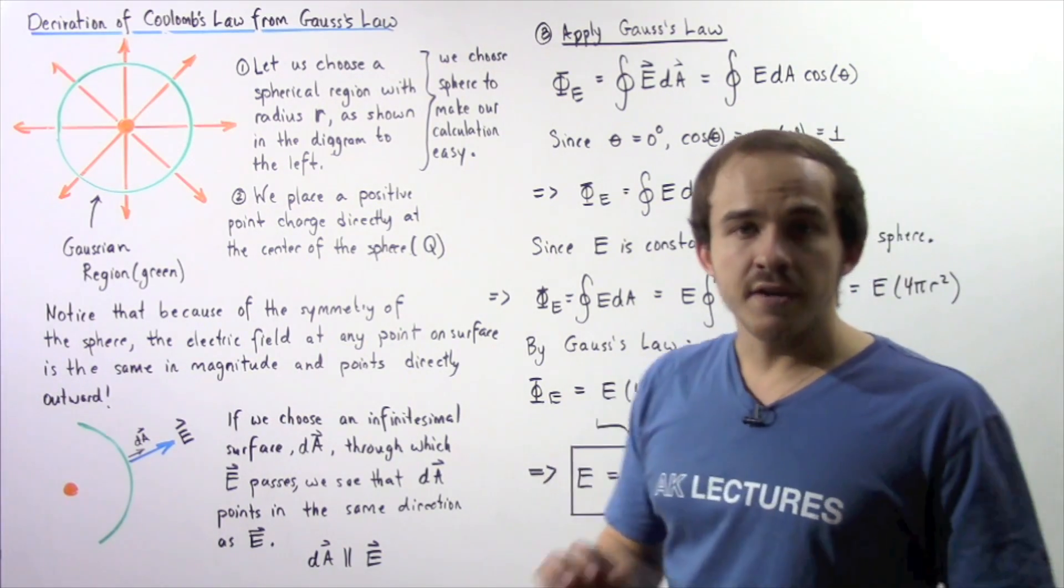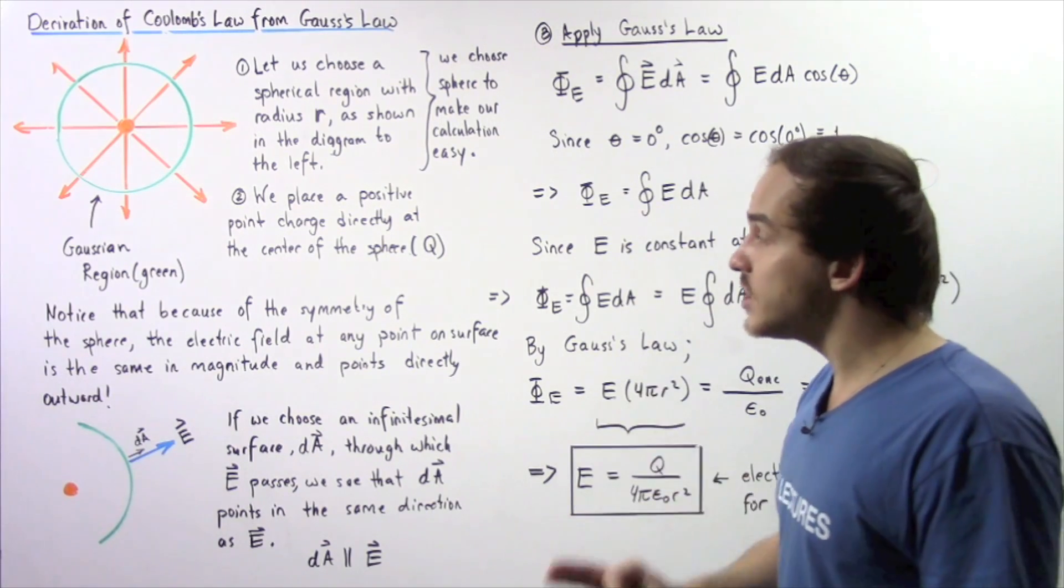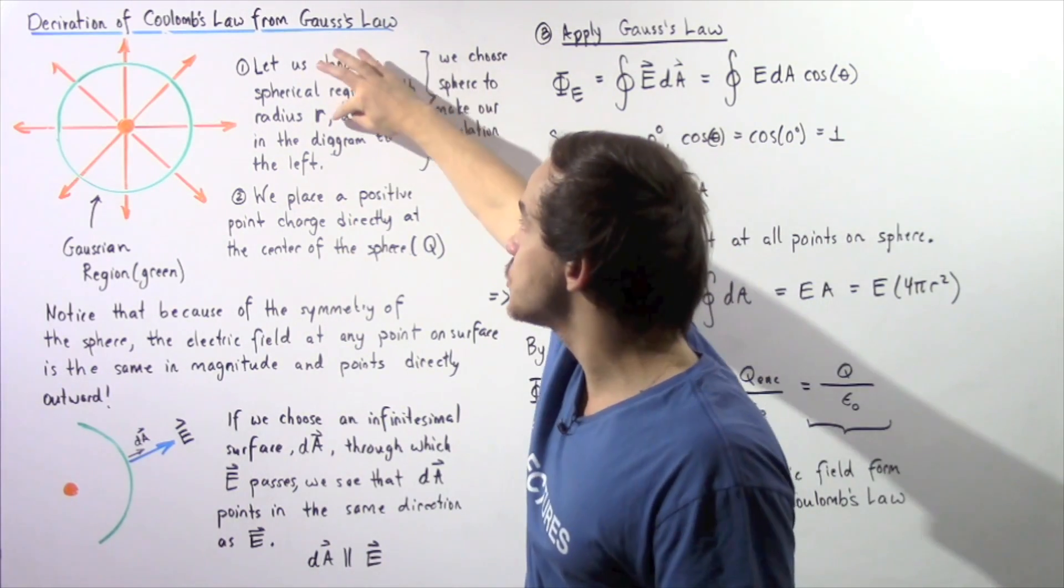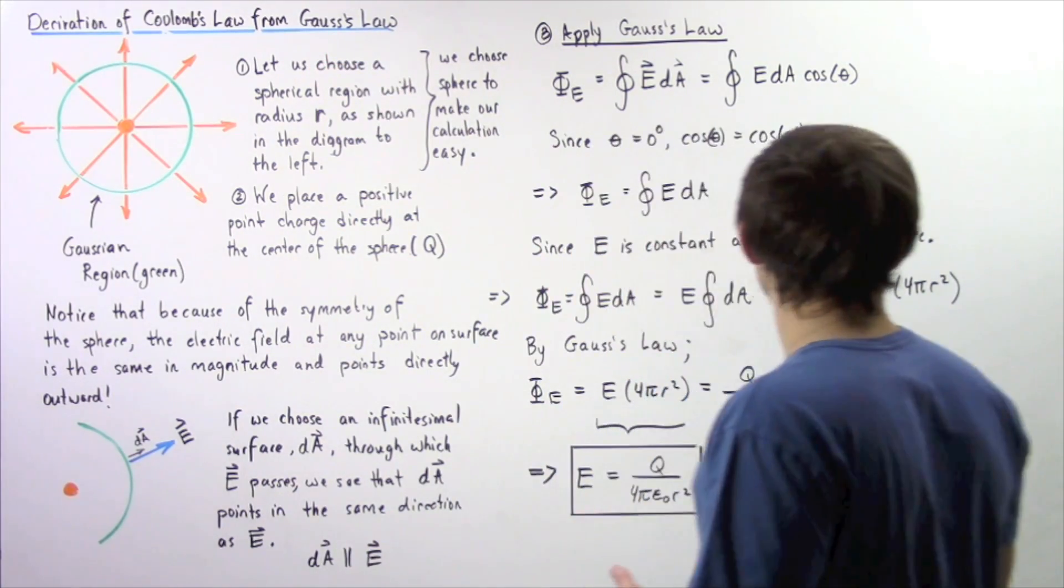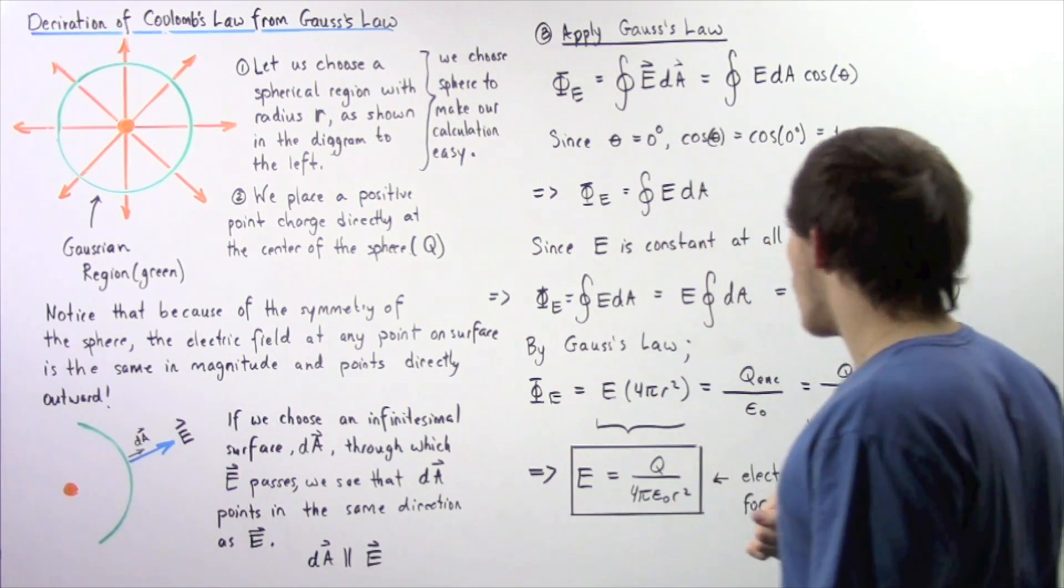The surface area of any sphere is given by the product of four pi multiplied by the radius squared, where the radius is given by the lowercase r because we chose our radius to have a lowercase r. We chose our sphere to have a radius of lowercase r.